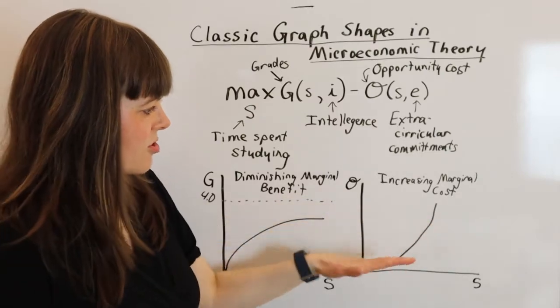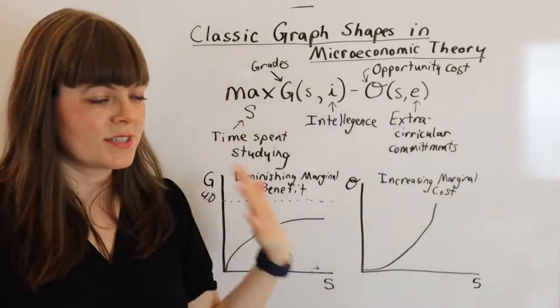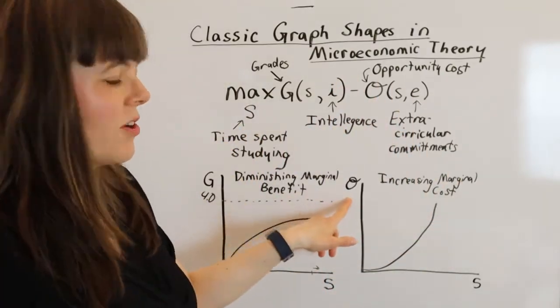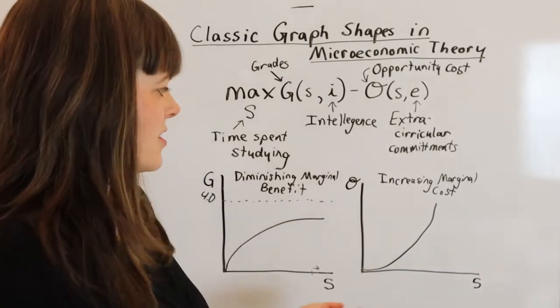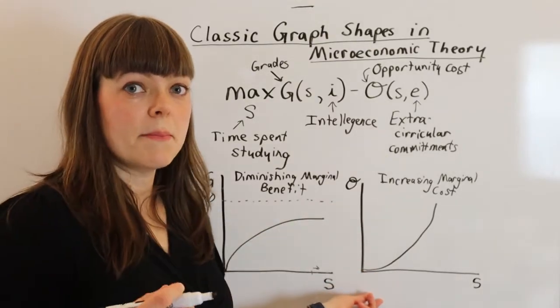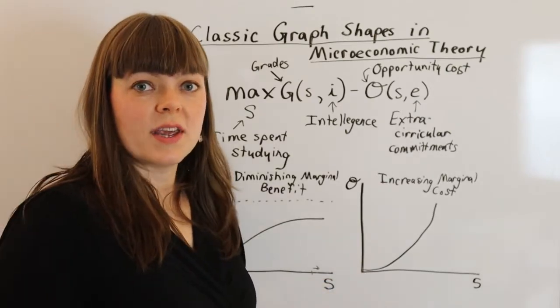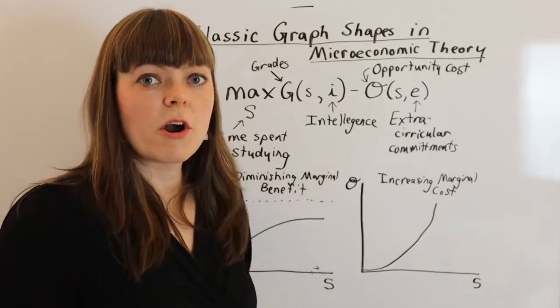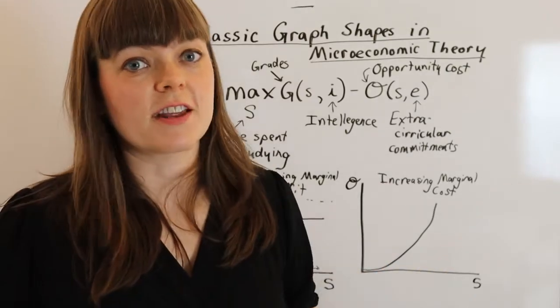Now the increasing marginal cost shape is also something that you see a lot of. And with opportunity cost, this has a pretty powerful intuition. The intuition is if you're going to give up half hour of your week to study, what are you going to give up out of everything in your life?